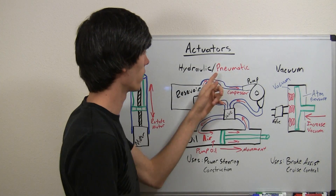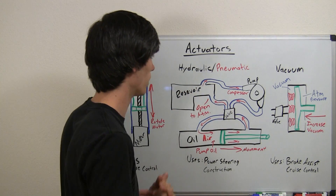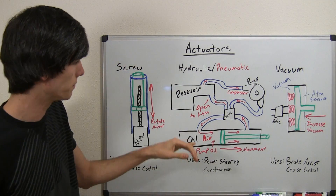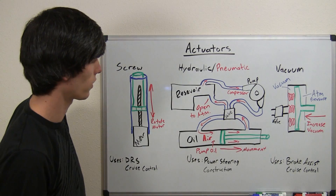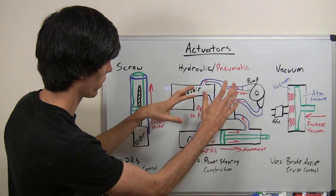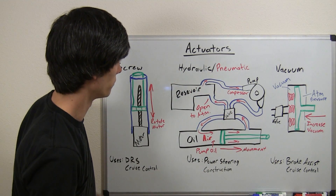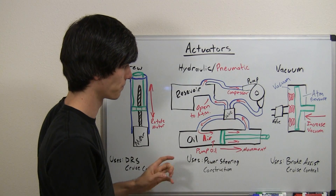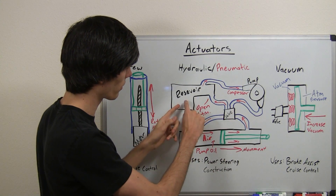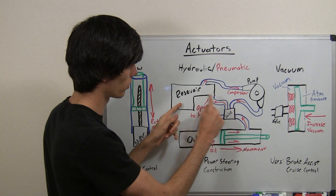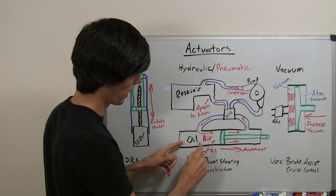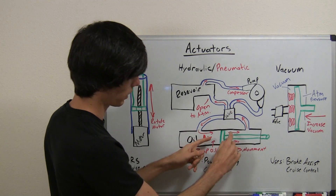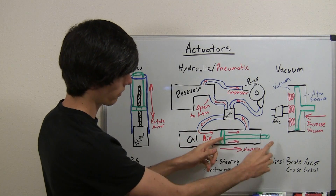Another type of actuator: hydraulic and pneumatic. Hydraulic uses oil pressure; pneumatic uses air pressure. Here I've drawn a hydraulic system — everything in black pertains to the hydraulic system, and the words in red pertain to the pneumatic system. What you've got is a reservoir, a pump, a valve, and a system that uses the oil pressure to move this green device.